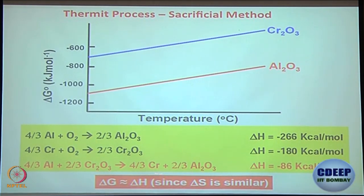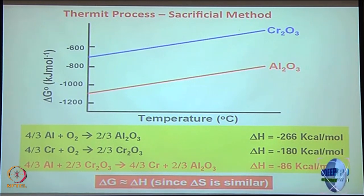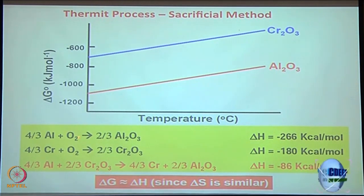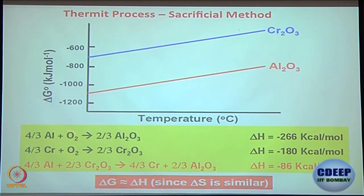Chromium is not going to react with alumina to give you the reverse reaction. In this case, alumina is going to be your sacrificial reagent — it sacrifices itself to give you the pure form of the other one. Both reactions are stoichiometrically similar: aluminum and chromium each react with oxygen gas, and everything in terms of state and stoichiometry is exactly the same.